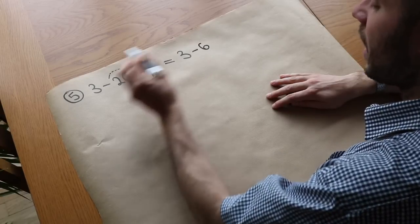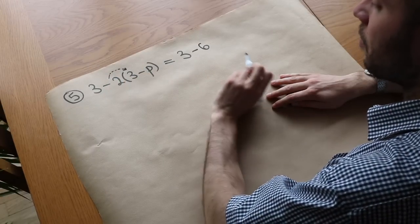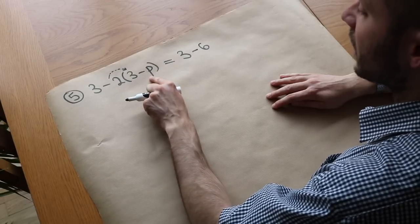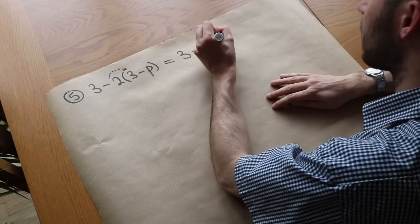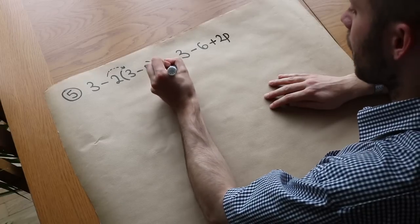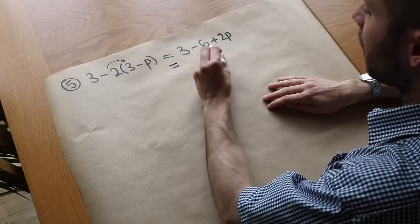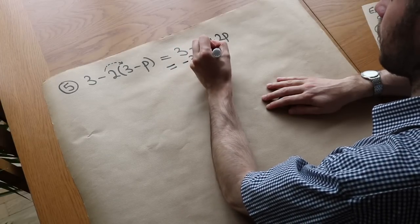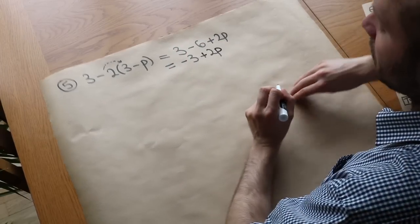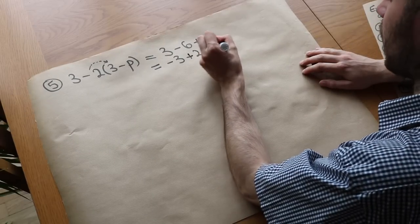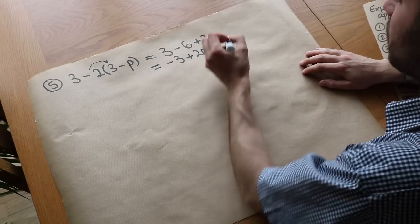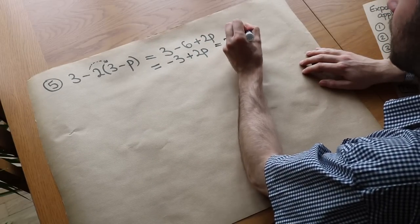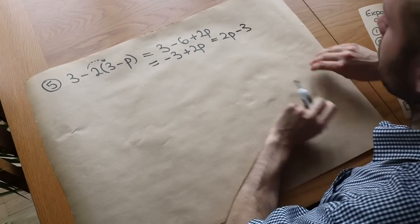So we're going to do minus 2 times 3, which is minus 6. And we've got minus 2 times minus p. Negative times negative is positive, so it's plus 2p. And then that finally simplifies to what we've got 3 minus 6, which is minus 3. And then we're adding 2p. And I often like to put the positive term first to tidy it up. So I could write this as 2p minus 3. And that's just slightly tidier, but that's completely correct.